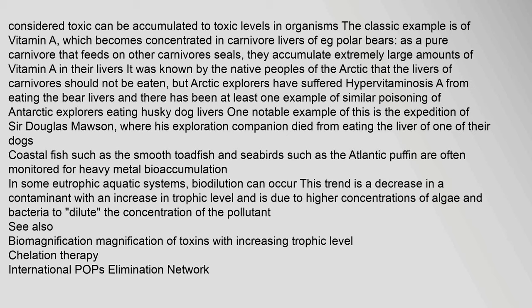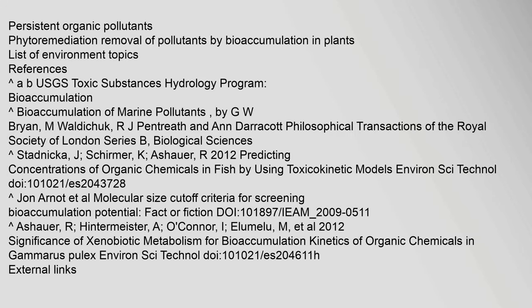In some eutrophic aquatic systems, biodilution can occur. This trend is a decrease in a contaminant with an increase in trophic level, and is due to higher concentrations of algae and bacteria diluting the concentration of the pollutant. See also: Biomagnification — the magnification of toxins with increasing trophic level.